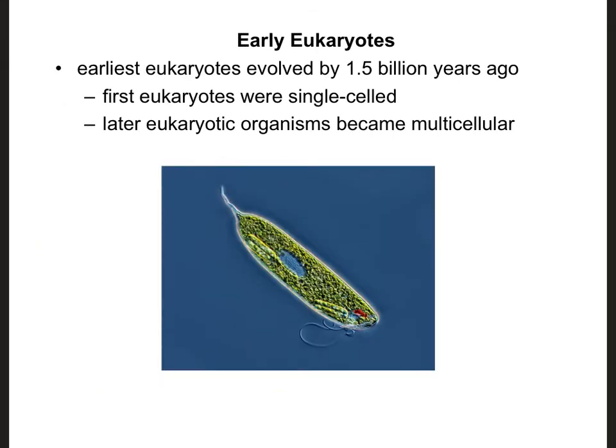The first eukaryotes evolved about 1.5 billion years ago. The first eukaryotes were single-celled, kind of like prokaryotes — just a more complex extension of those organisms. Later on, eukaryotic organisms started to become multicellular, and over time things like plants, animals, and fungi began to evolve.